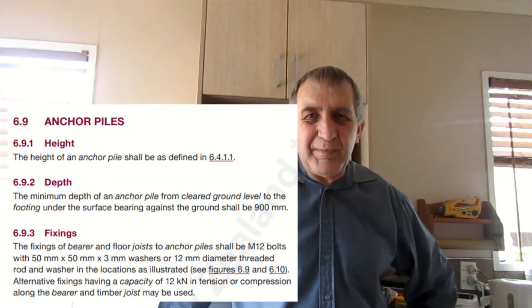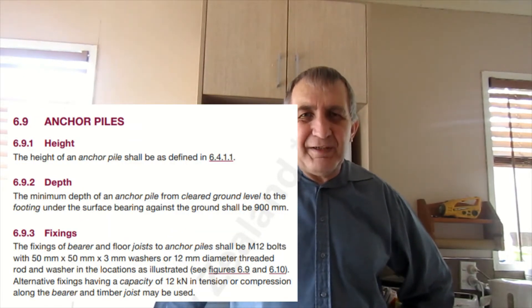With the anchor poles there's three different clauses that need to be observed. This is under NZS 3604 under section 6.9.